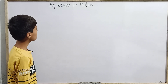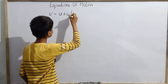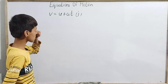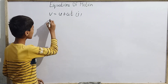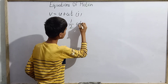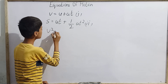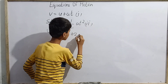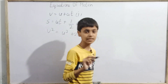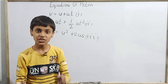The first equation of motion is v equals u plus at. The second equation of motion is s equals ut plus half at squared. The third equation of motion is v squared equals u squared plus 2as. There are only these three equations of motion — no more than three exist.